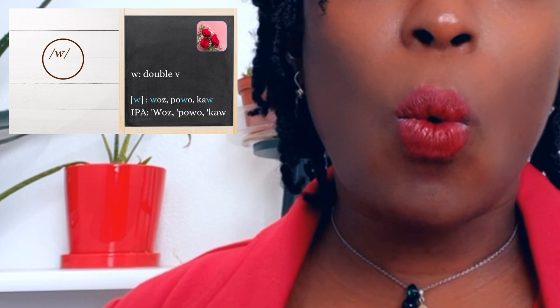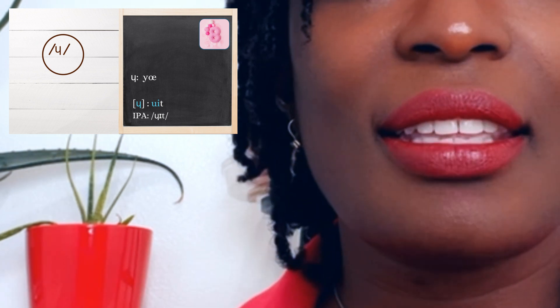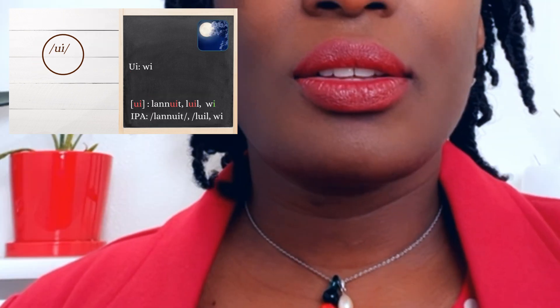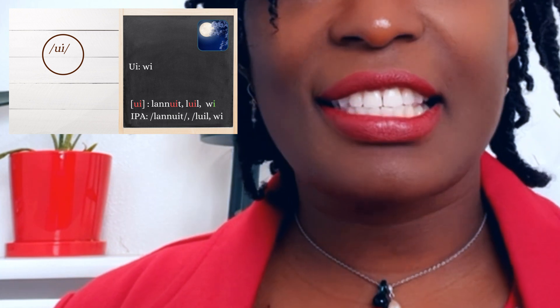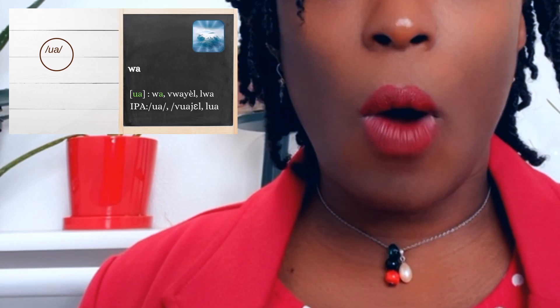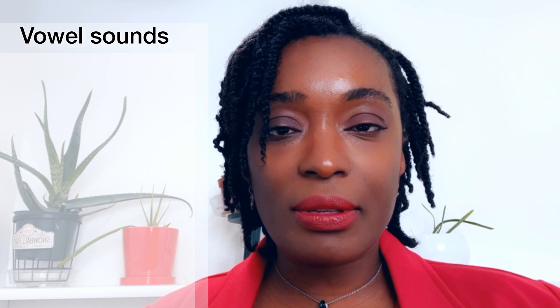W as in wa. Y as in yé. In Haitian Creole, we have three distinct diphthongs, so we are going to cover them in this section. The first diphthong is yui as in huissier or yuit. The second one is wui as in lanuit or l'huile. The third one is oi as in loi or foyer.